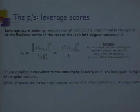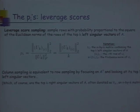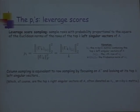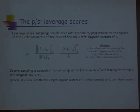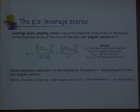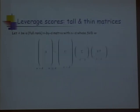I'm talking about row sampling here. Column sampling is the same story — instead of working on A, work on A transpose. The left singular vectors of A transpose are the right singular vectors of A. So if you want to do column sampling, you look at the top K right singular vectors of A, often denoted as an N by K matrix V_K. Two probability distributions: length-squared sampling directly on A, or computing the top K left singular vectors and doing length-squared sampling on U_K — those are the leverage scores.